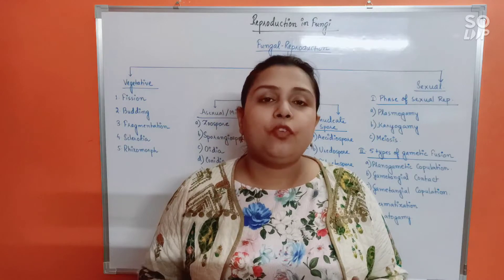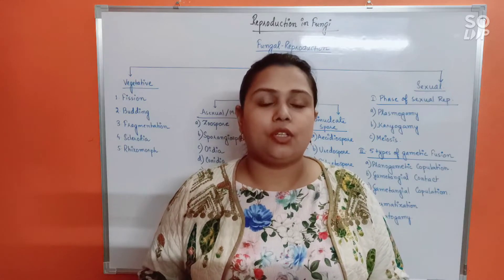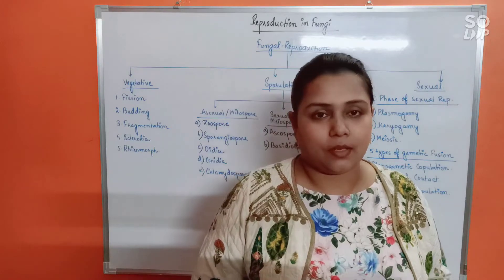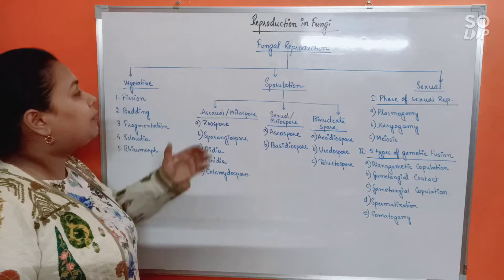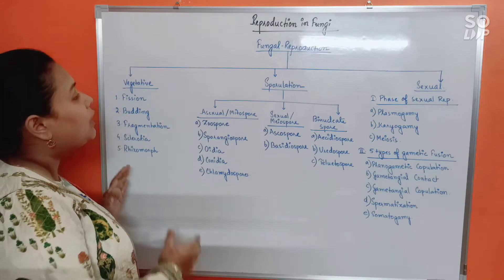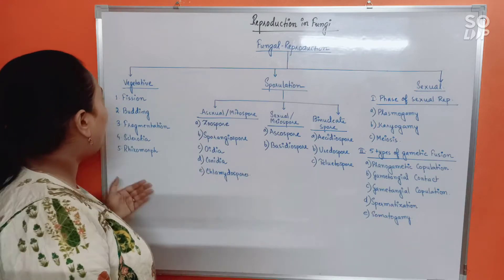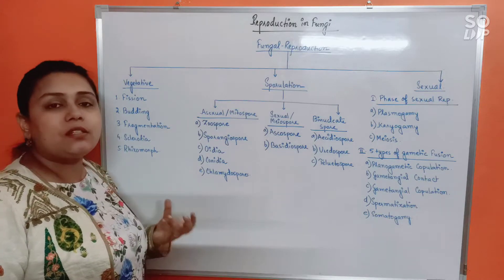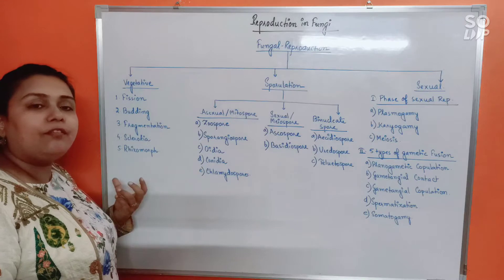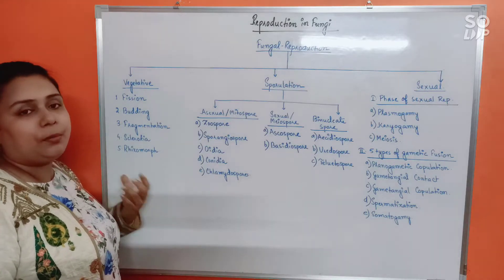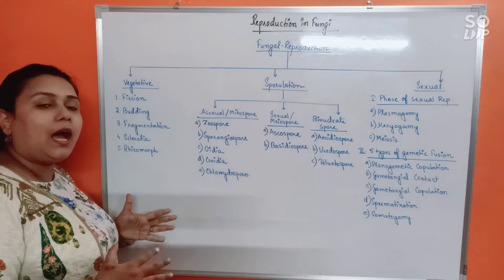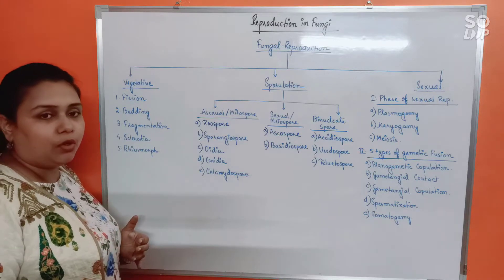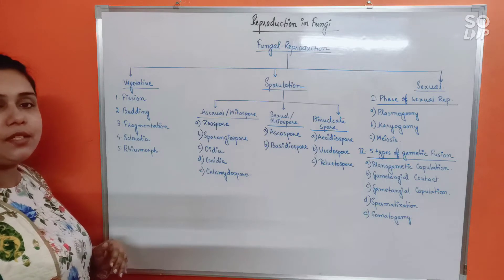Before we go into detailed discussion, I want you to properly understand and learn this chart. Fungal reproduction has mainly been divided into three distinct categories. One is vegetative mode. Vegetative mode means no specialized part would be formed in the fungal body before reproduction — so from the fungal hyphae itself or the fungal cell itself, an offspring will be born directly. Under vegetative mode we will be discussing five types.